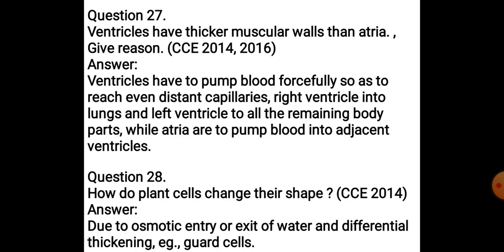Next: Ventricles have thicker muscular walls than atria — give reasons. The reason is that ventricles have to pump blood forcefully to reach the distant capillaries — the right ventricle pumps into the lungs and the left ventricle to all remaining parts — while atria only pump blood to the adjacent ventricles. So the ventricles require much more force, but atria pump blood only to the ventricles, so their walls are thin.